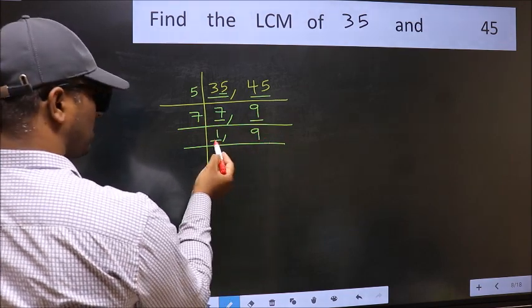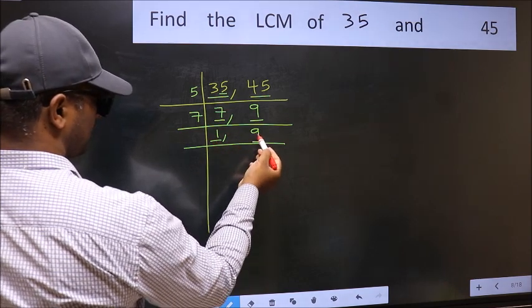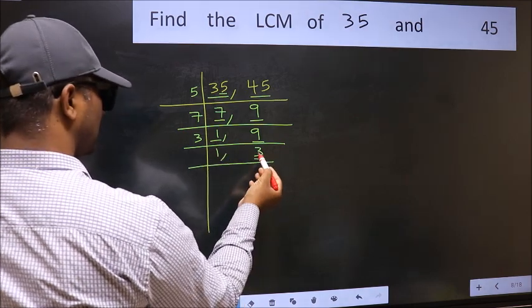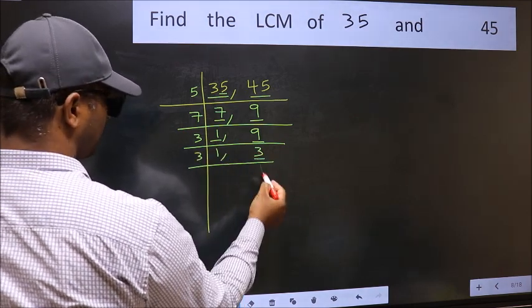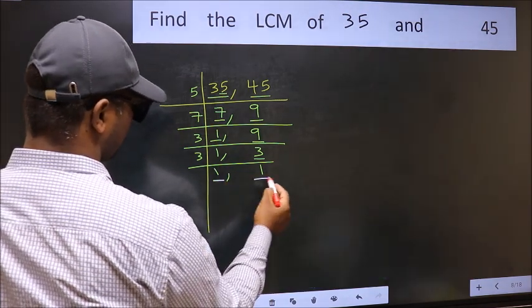Now we got 1 here, so focus on the next number, 9. 9 is 3 times 3. Now here we have 3. 3 is a prime number, so 3 divided by 1 is 3. So we got 1 in both places.